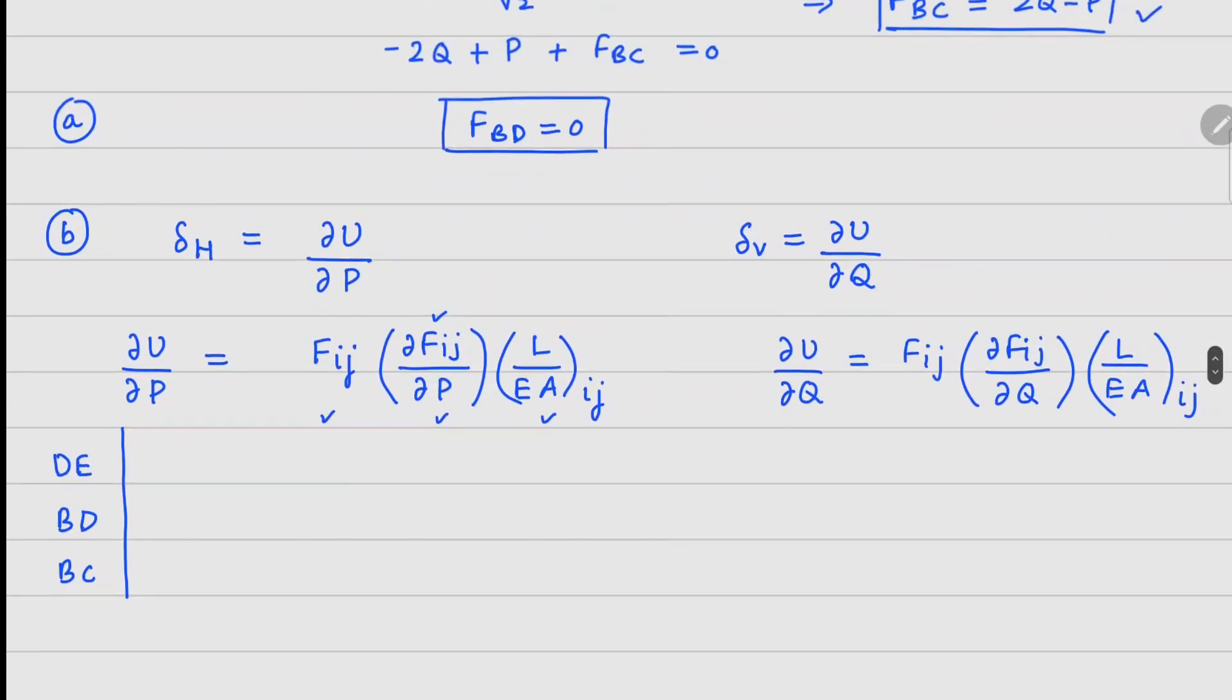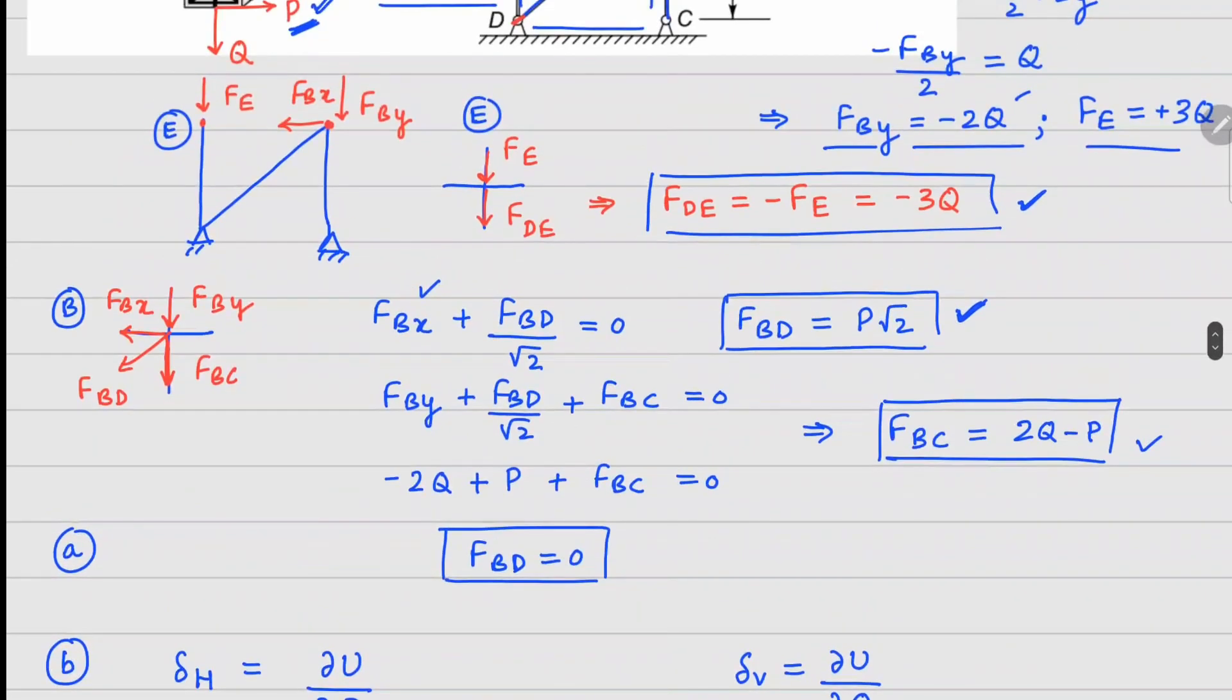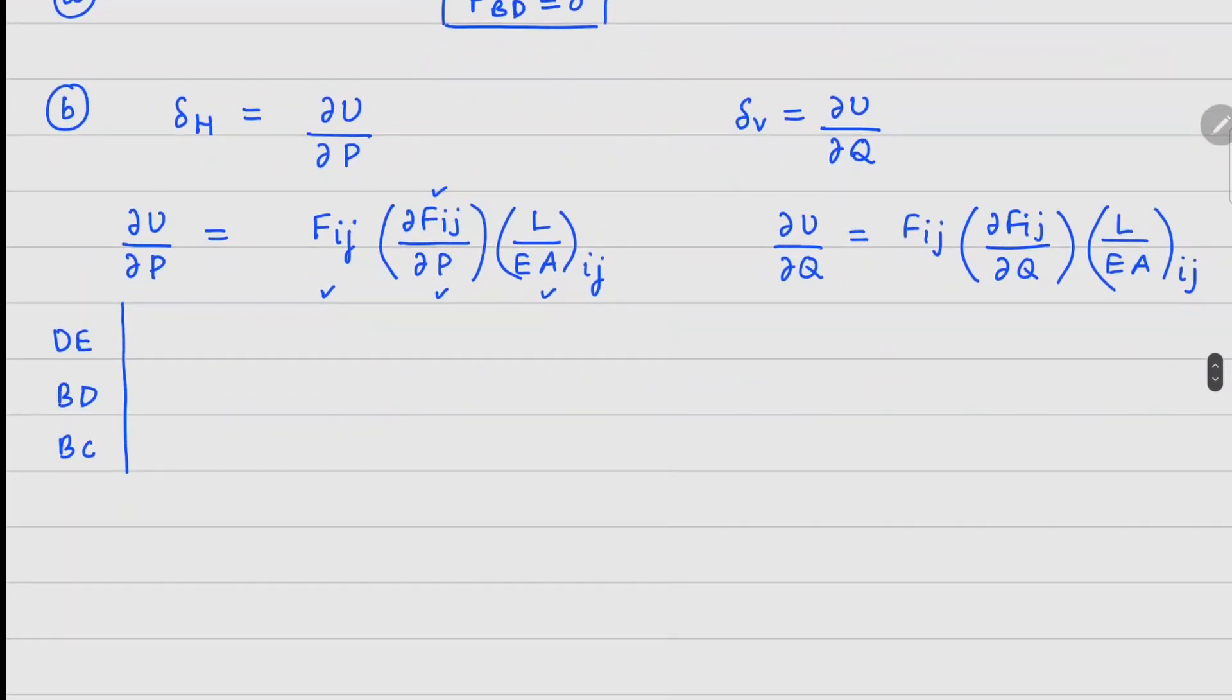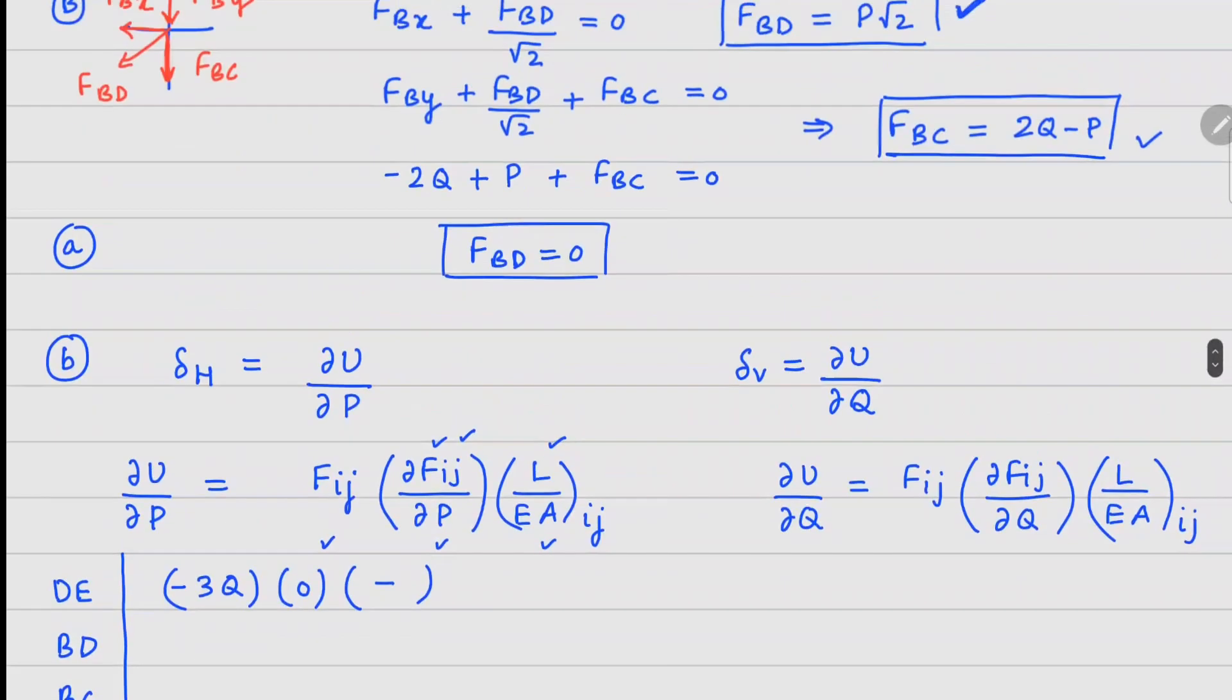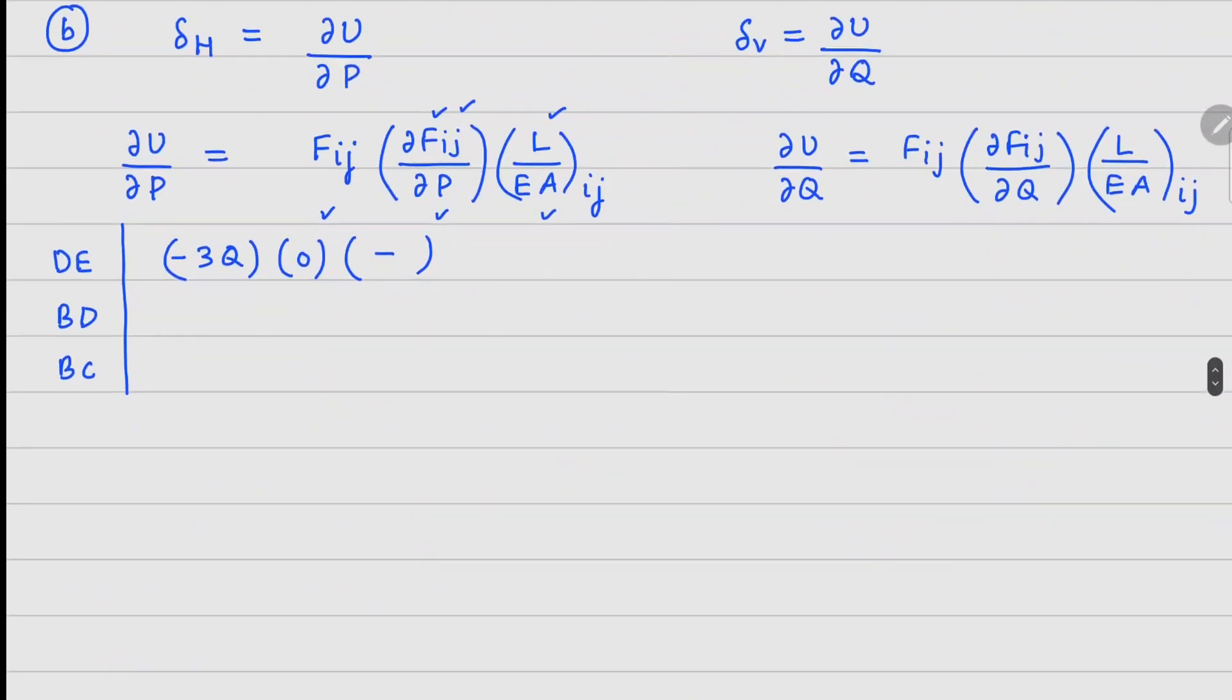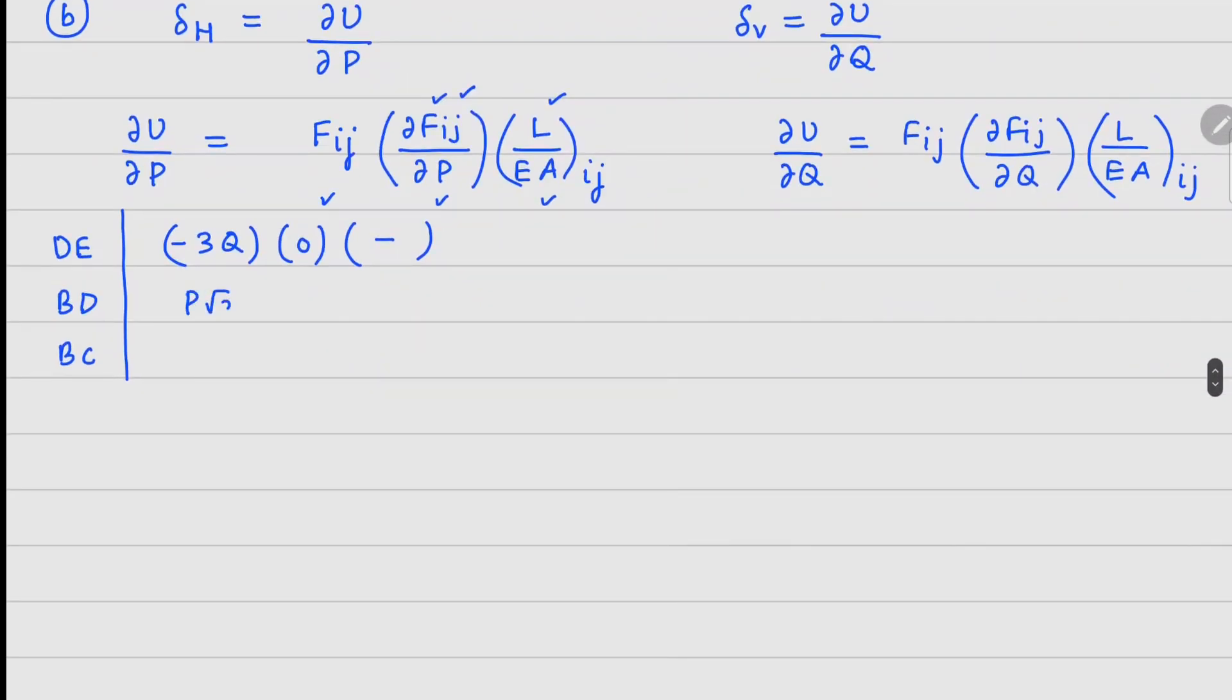If you look at member DE, member DE has a force which is minus 3Q. The derivative of this force with respect to P is going to be zero, so we can skip this term. For member BD, the force is P square root 2. Derivative with respect to P is square root 2, and the value of P is going to be zero in the end, so this term will also become zero.